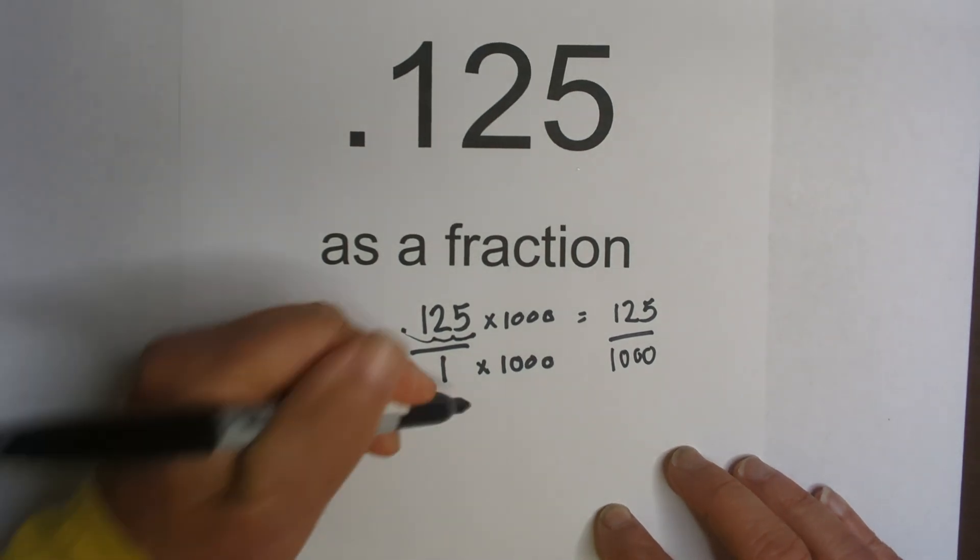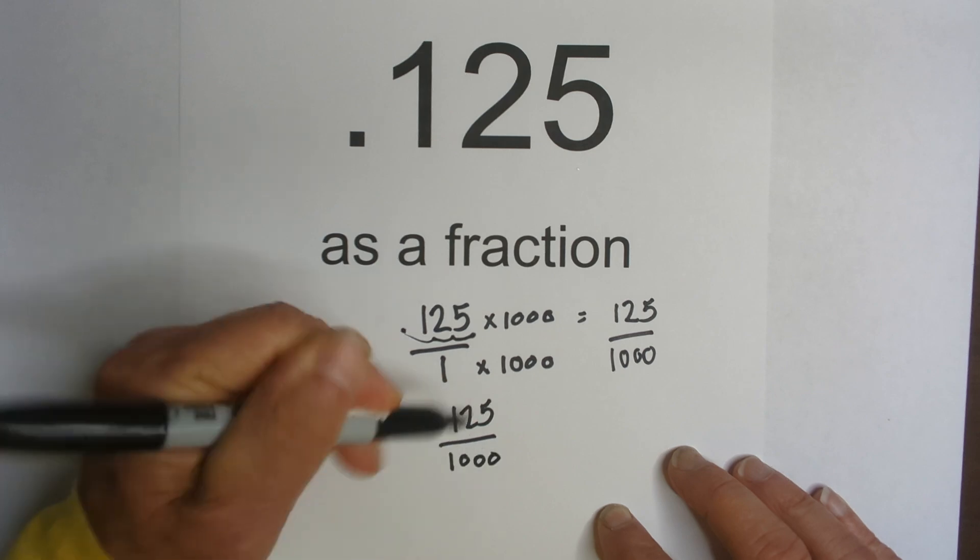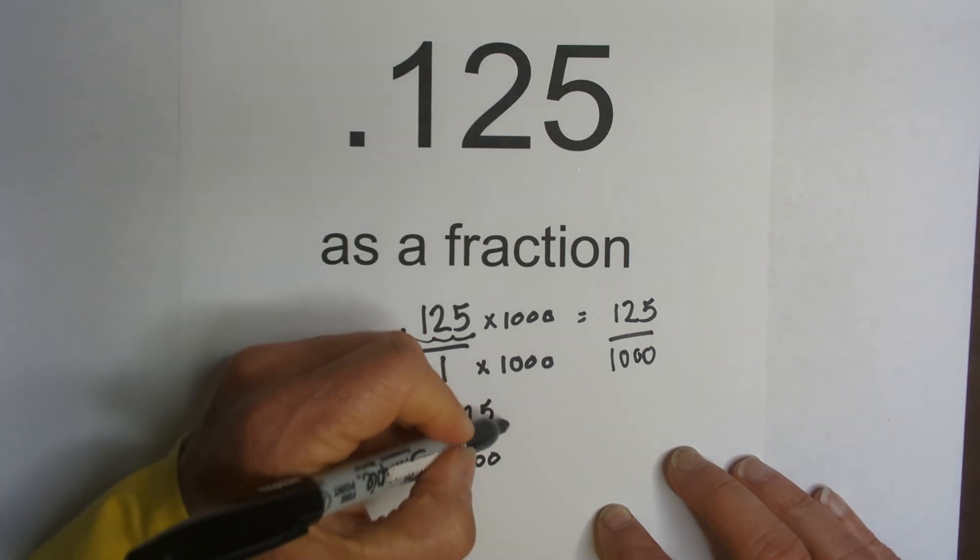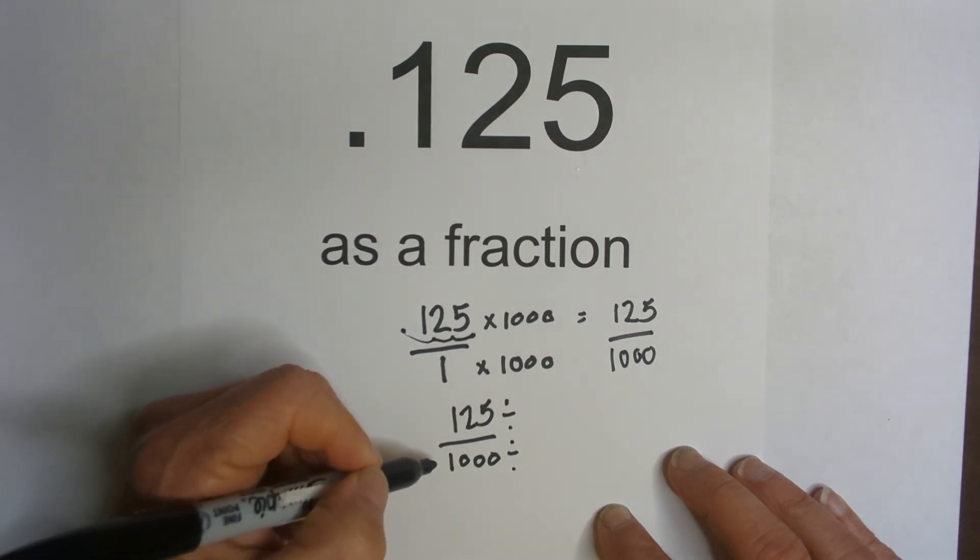I now need to simplify the fraction. I'm going to rewrite it down here. And I can do that. To begin with, I know 25 goes into both 125 and 1,000.